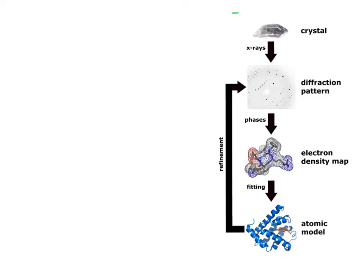This first step, although it looks simple in words, can often be very challenging and is perhaps the least likely to succeed of all the steps, since not all substances are amenable to forming crystals. There's not a one-size-fits-all method for creating a crystal, and it's generally necessary to determine empirically on a case-by-case basis what's going to work for crystallizing a particular substance.